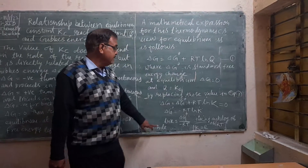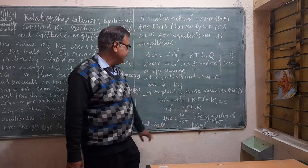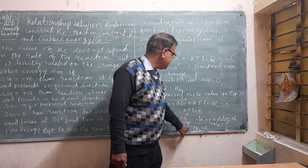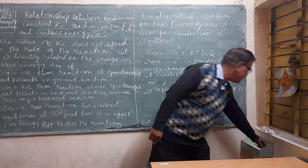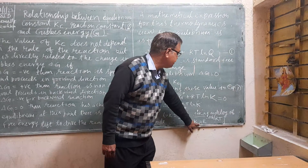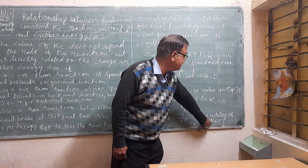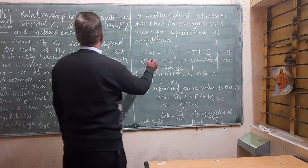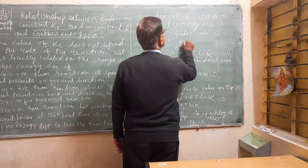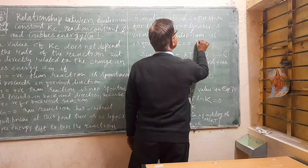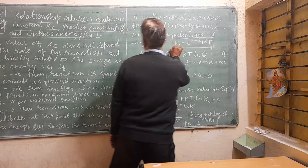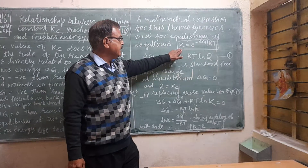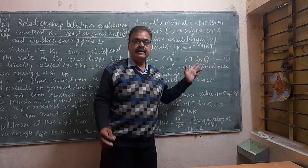From this equation, ln K is equal to minus delta G naught divided by RT. Taking the natural log of both sides, we arrive at the equation: K is equal to e to the power of minus delta G naught divided by RT. This is the relationship between the equilibrium constant K and delta G naught.